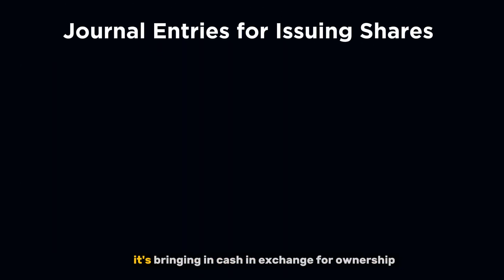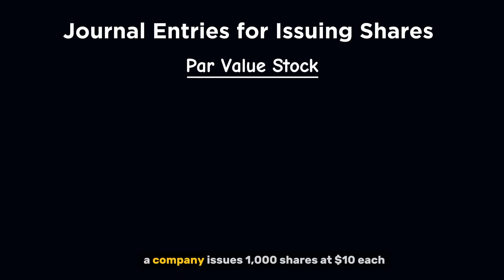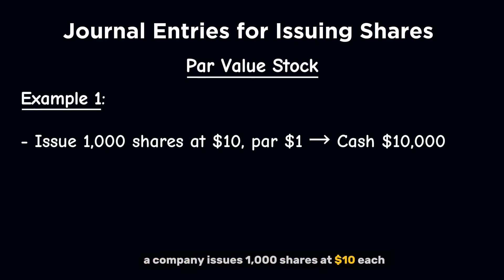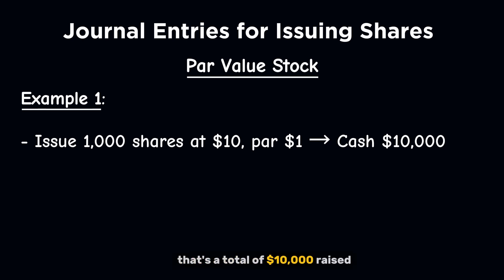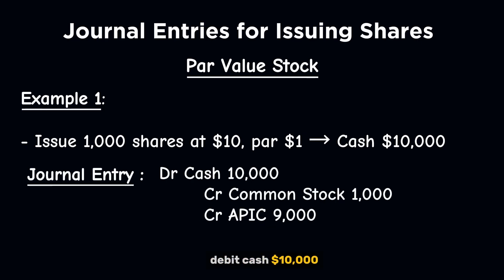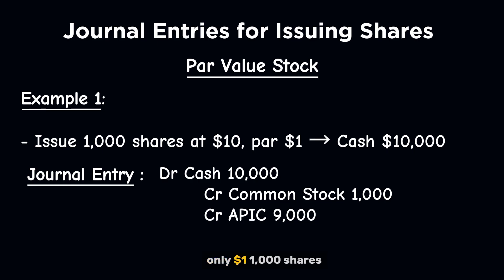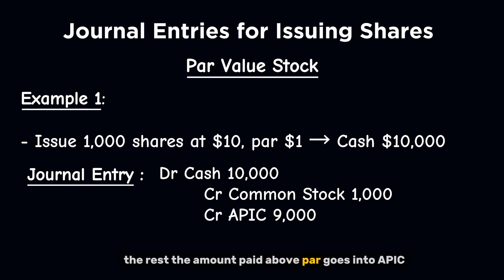When a corporation issues shares, it's bringing in cash in exchange for ownership. A company issues 1,000 shares at $10 each, and the shares have a par value of $1 — that's a total of $10,000 raised. Here's how the journal entry looks: debit cash $10,000; credit common stock $1,000; credit additional paid-in capital (APIC) $9,000. The common stock reflects the par value only — $1 times 1,000 shares. The rest, the amount paid above par, goes into APIC.